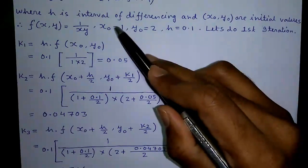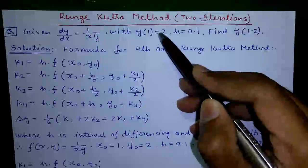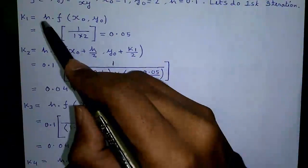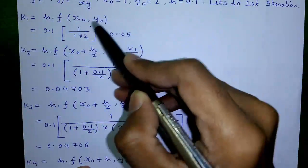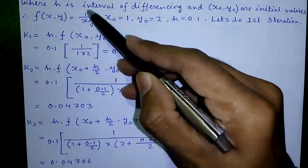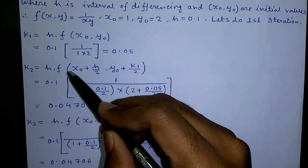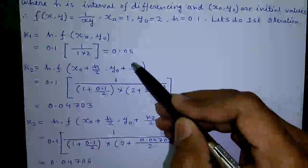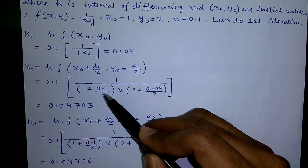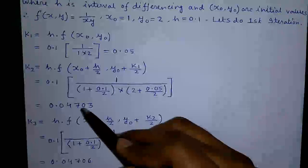Let us do our first iteration. x0 equals 1 and y0 equals 2. So k1 equals h times f(x0, y0) equals 0.1 times 1/(x0 times y0), putting all values in, which gives k1 equals 0.05. Next, k2 equals h times f(x0 + h/2, y0 + k1/2) equals 0.1 times 1/((1 + 0.1/2)(2 + 0.05/2)), so k2 equals 0.04703.